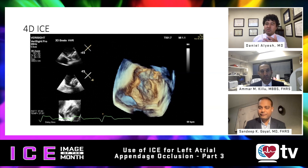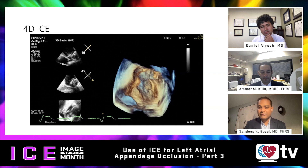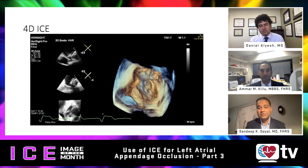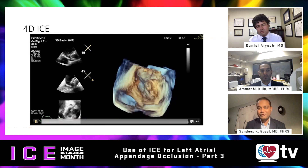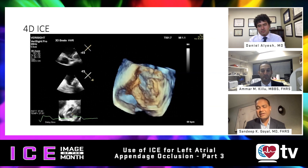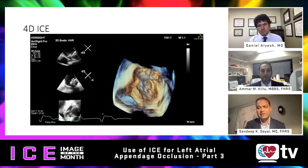4D ICE is certainly the way of the future for left atrial appendage closure and structural and EP interventions. Multi-planar imaging from the same position reduces the need to move the catheter. You can find the most stable spot, leave the catheter there, and have a 'park and play' approach. The 3D imaging would be really helpful to assess the device before releasing, especially if you suspect any leak, because right now we do CT to assess leak complexity. A live 3D during the case would eliminate that need. The biggest barrier will remain cost and reimbursement.